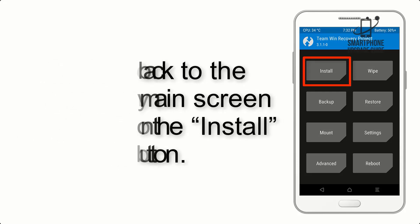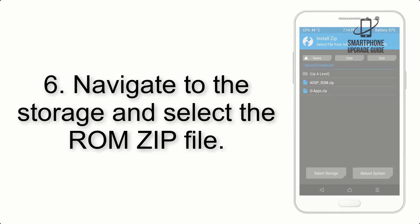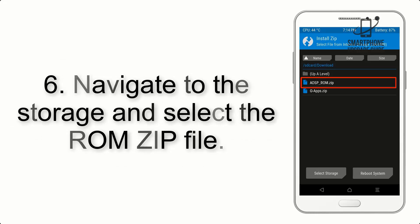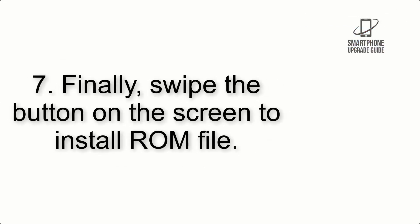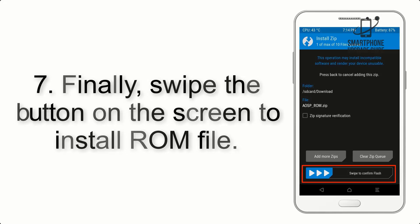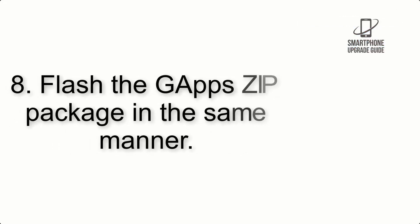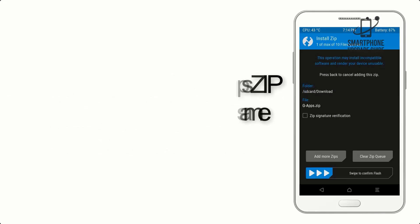Step 5: Go back to the recovery main screen and tap on the Install button. Step 6: Navigate to the storage and select the ROM zip file. Step 7: Finally, swipe the button on the screen to install the ROM file.